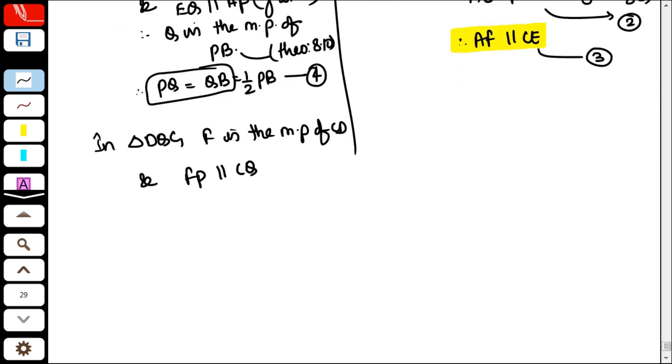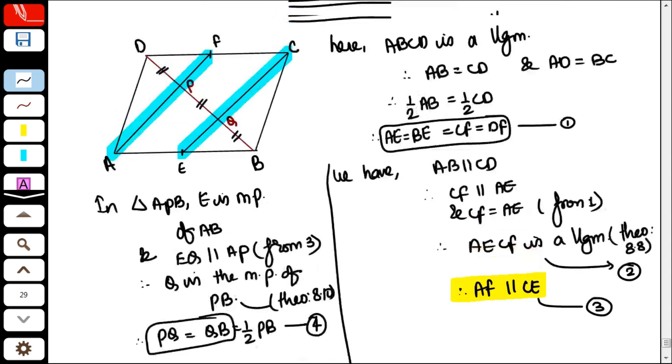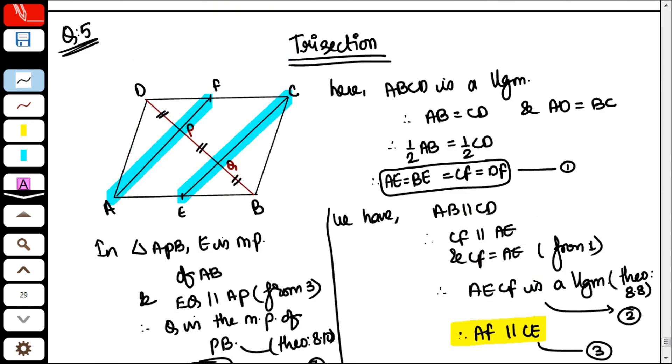FP is parallel to CQ. FP is parallel to CQ. This means that this point P is the midpoint of, what is P the midpoint of? DQ.